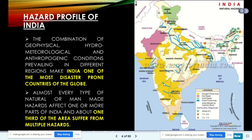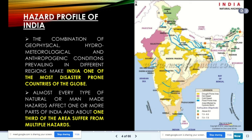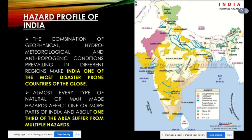On the hazard map, drought-prone areas are shown in yellow, the pink color shows hot desert, green shows cold desert, dark blue lines indicate flood-prone areas, white parts are areas affected by cyclonic storms, and the dots indicate earthquake-prone areas.